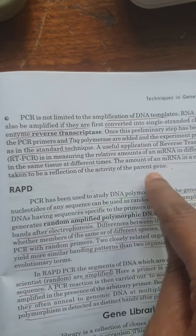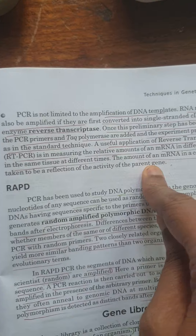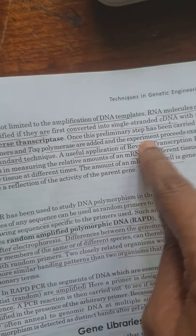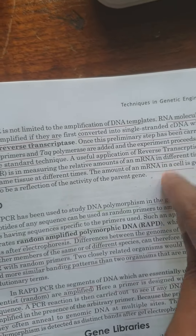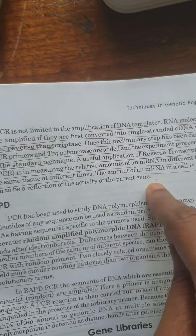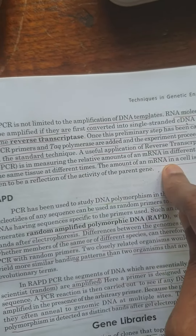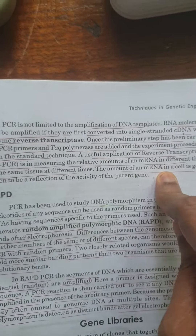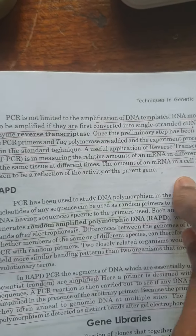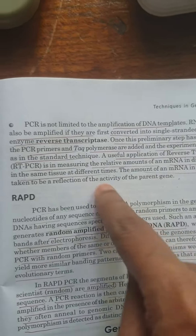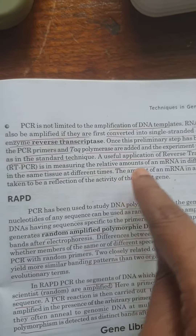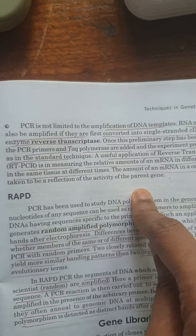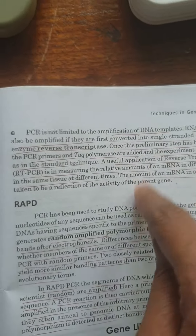If the parent gene is active, then the amount of mRNA will be high. When the mRNA in the cell is less, then the activity of the parent gene is low. So we can assume that.